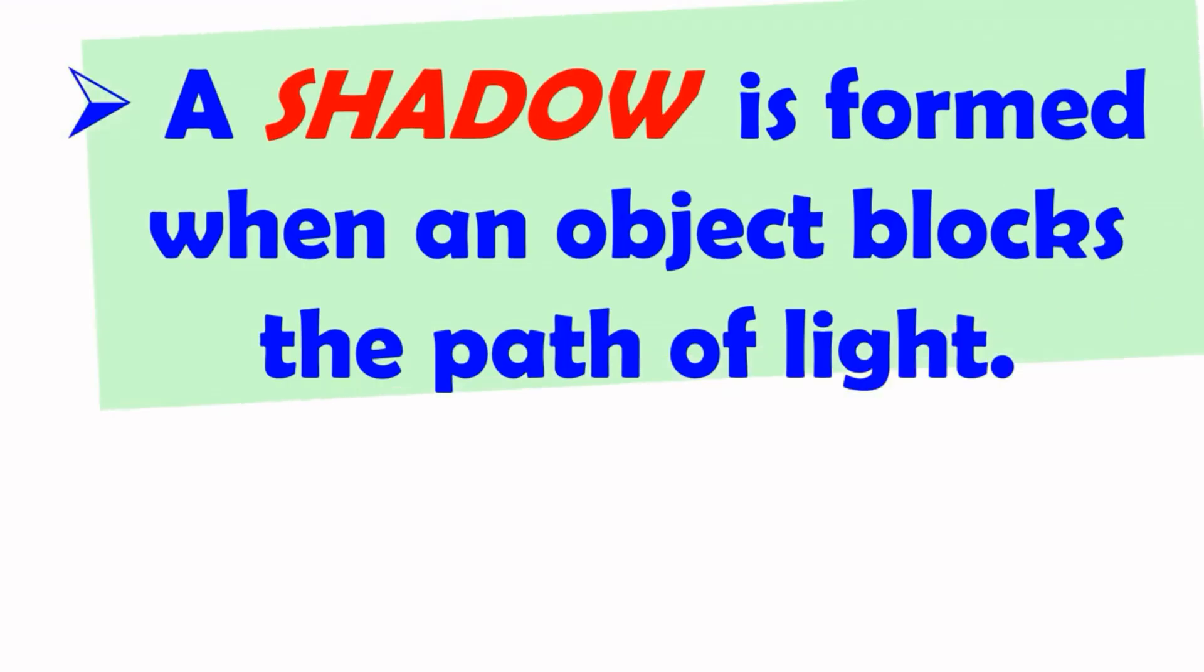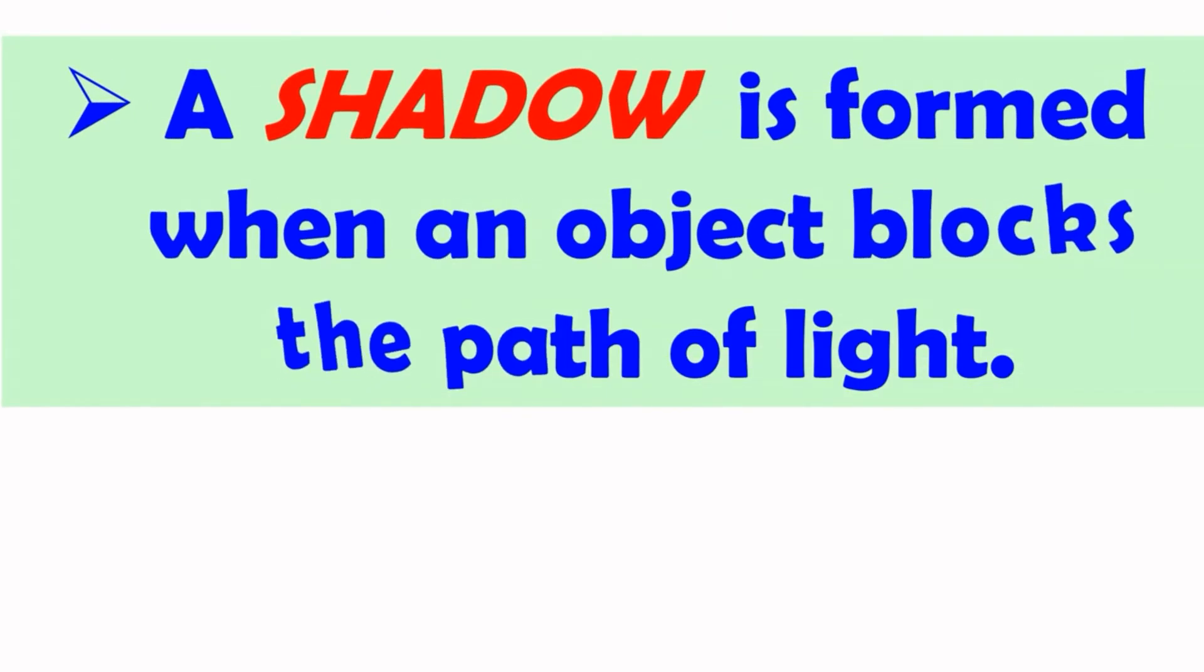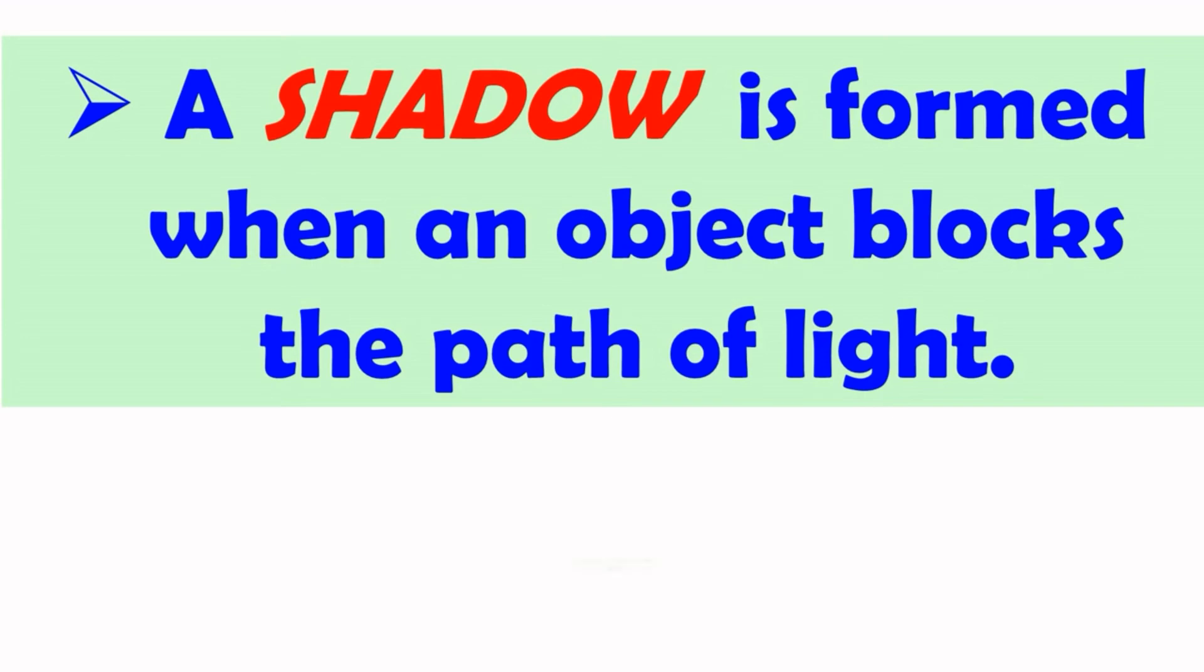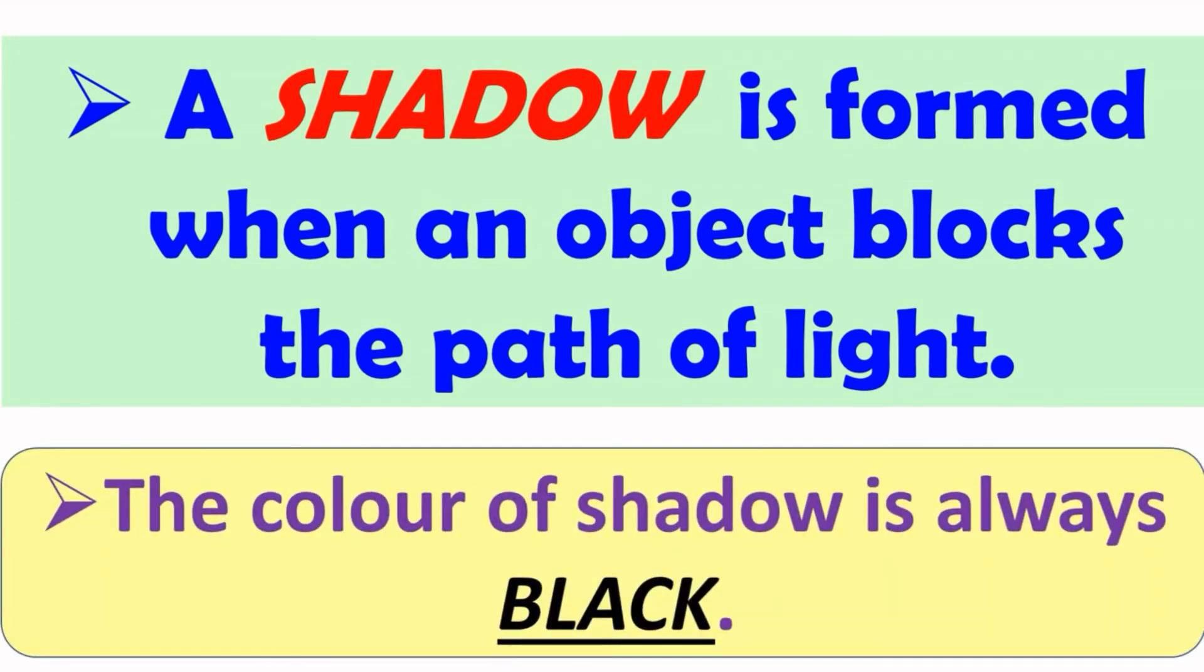Yes. Shadow is formed when an object blocks the path of light. It means shadow is formed when an object stops the path of light. And the color of shadow is always black.